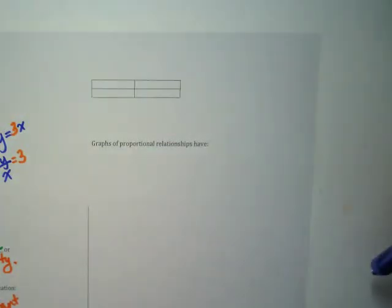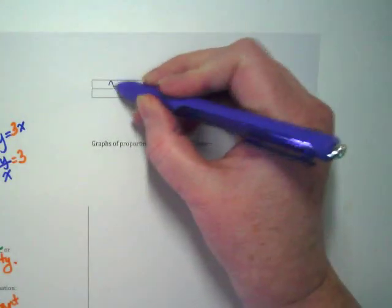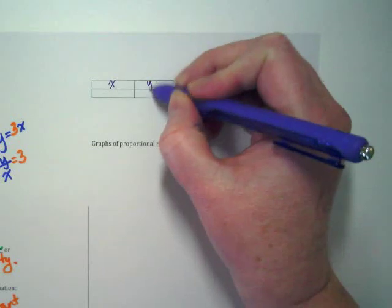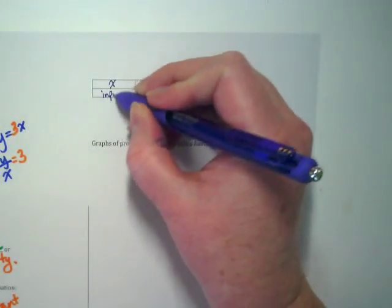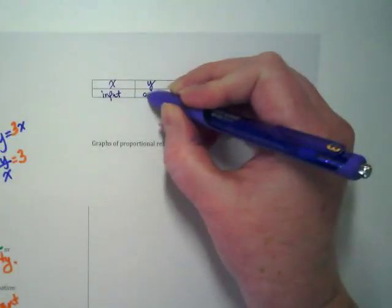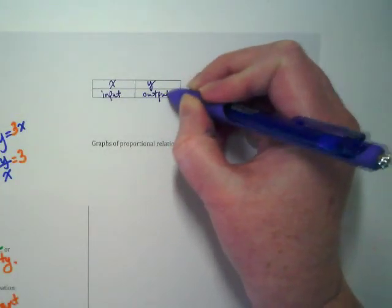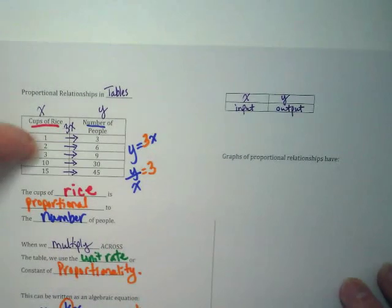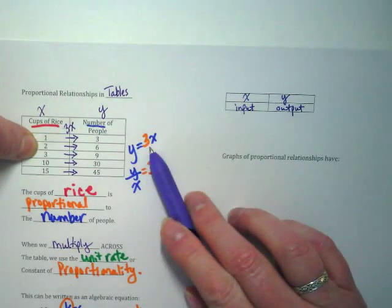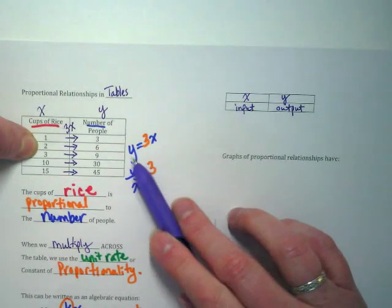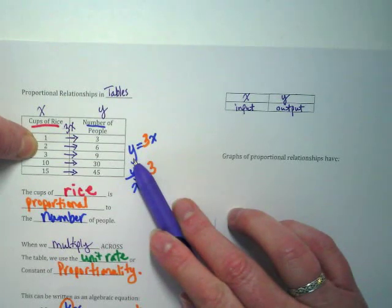This is just a reminder that in tables we have the x here and the y here, and that that is our input, and this is our output. What do I mean by that? We just said over here, if I input 2 for this x, 2 times 3 is my input, and my output is what it equals, which is 6.